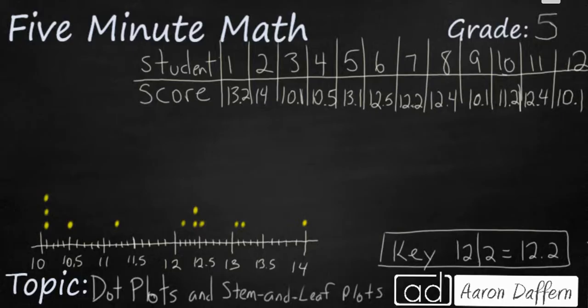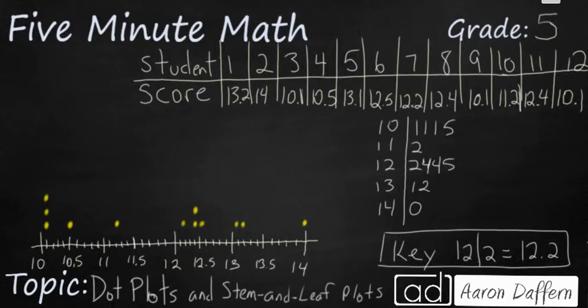So when you fill out your stem and leaf plot it looks like this. You have five different stems: 10, 11, 12, 13, and 14. You can see your biggest stems are 10 and 12.